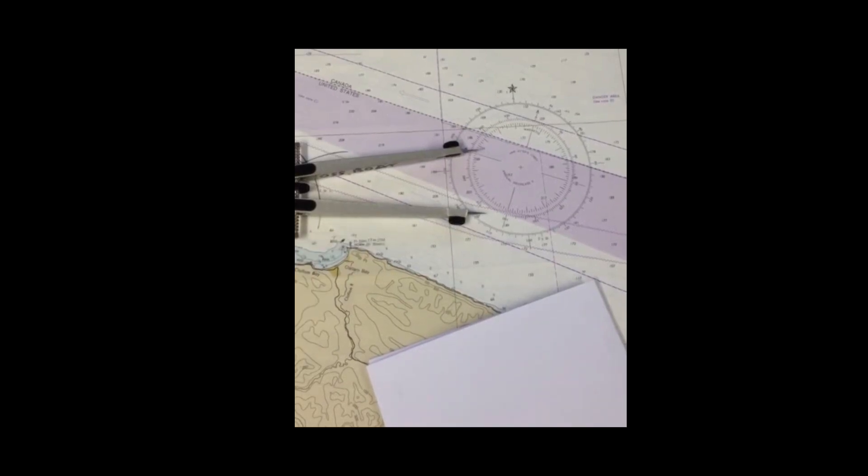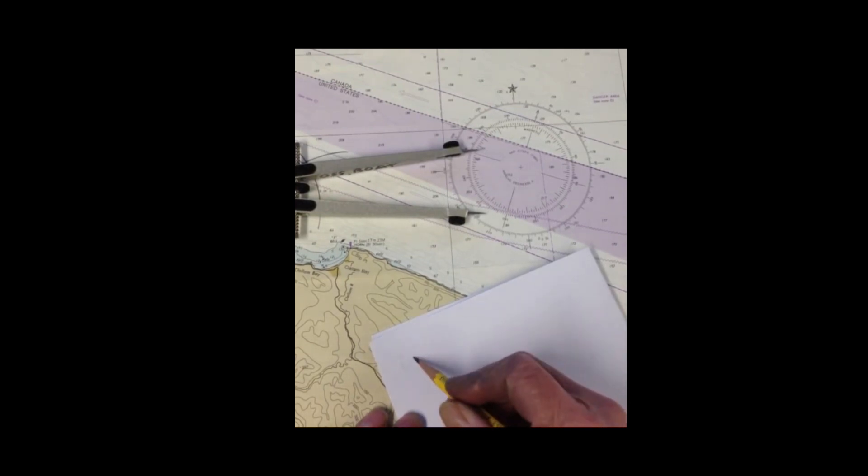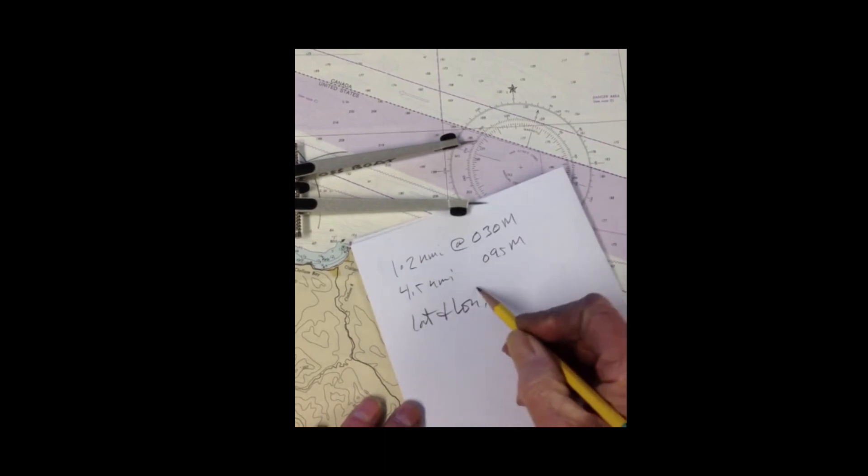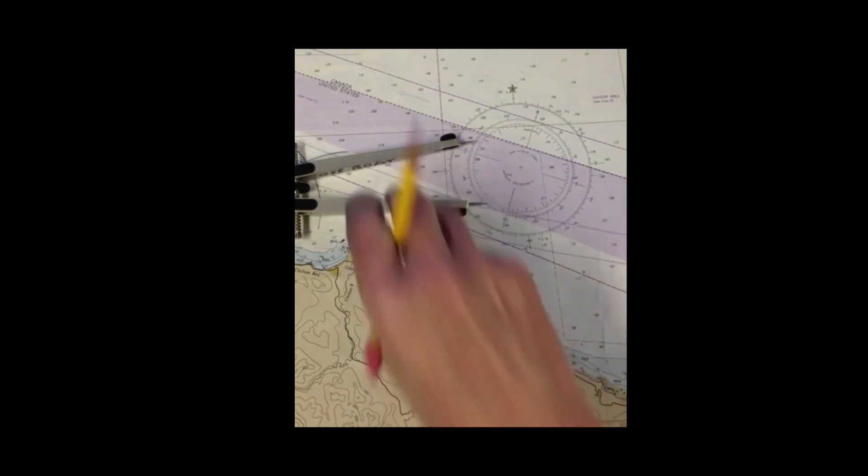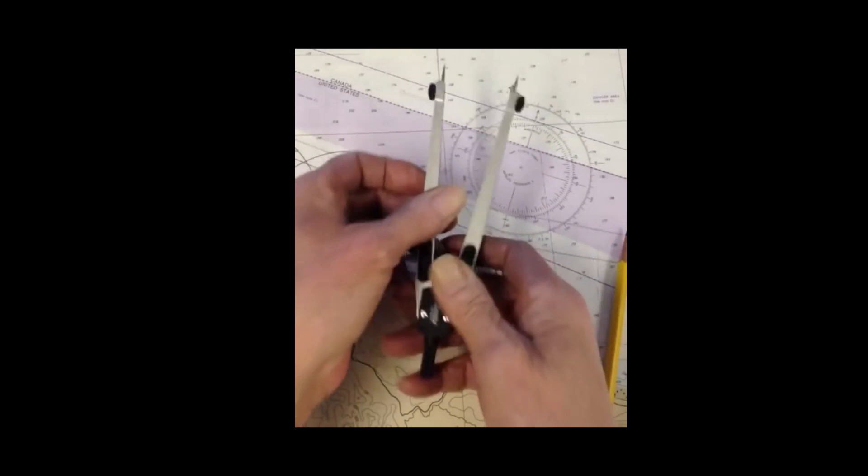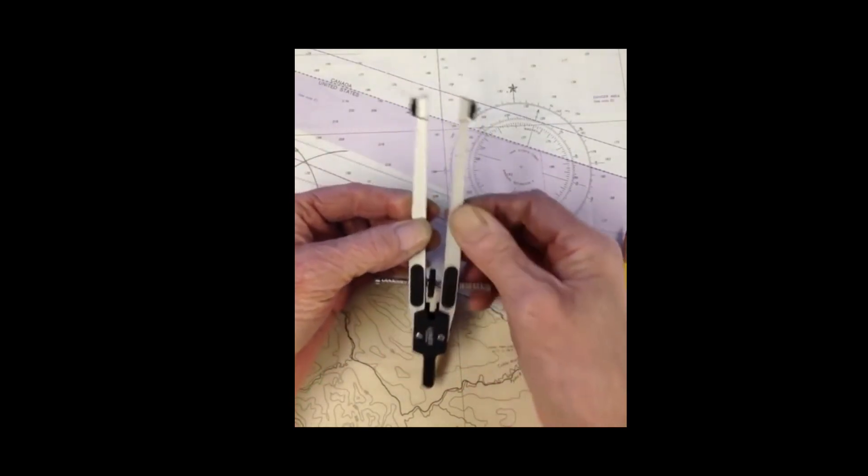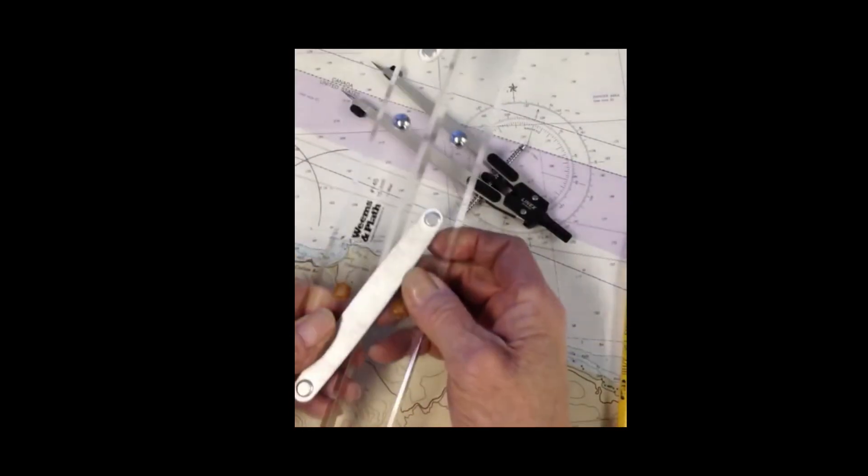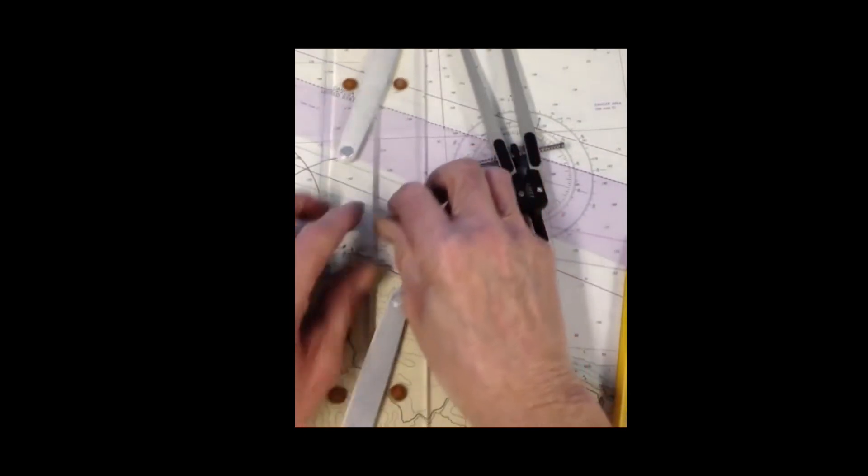Hi, this is David Birch at Star Path School of Navigation. I want to do a sample plotting with parallel rulers and dividers. The tools we'll be using are these speed bow dividers with a nice feature that you rotate for precise setting but can override by pulling them, and parallel rollers which I'll demonstrate.